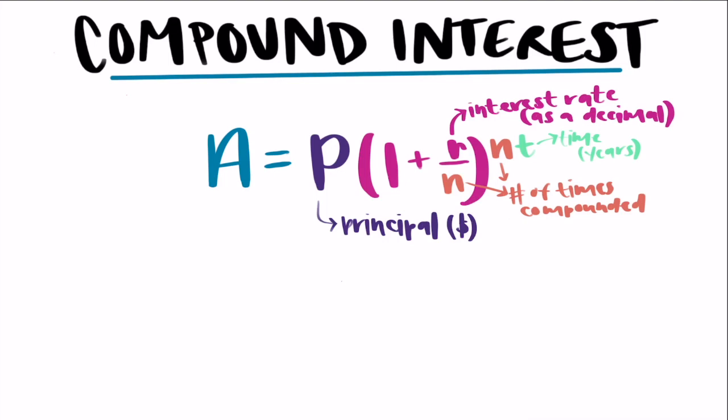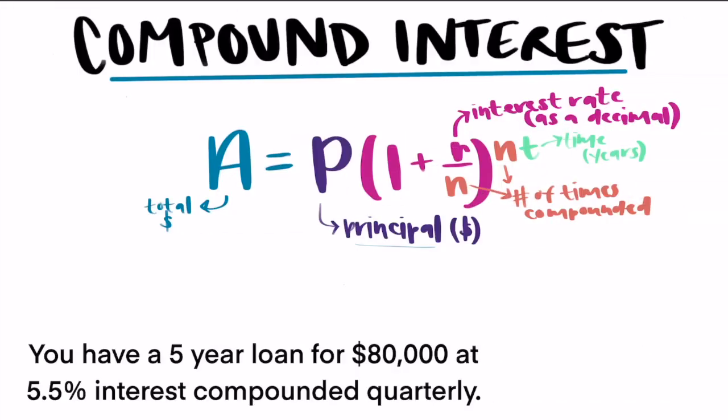If we wanted to figure out how much of that was just interest, we'd then have to subtract off that principal that we started with. And that could get us the amount in interest that was occurred. Let's take a look at an example and see how we can use this equation to solve.